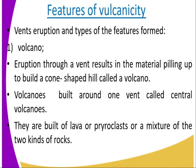These features are volcano features. Eruption through a vent results in material piling up to build a cone-shaped hill called a volcano. Volcanoes built around one vent are referred to as central volcanoes — you can have more than one volcano in one vent. They are built of lava, or pyroclast, or a mixture of the two.